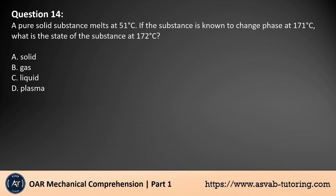Question 14. A pure solid substance melts at 51 degrees Celsius. If the substance is known to change phase at 171 degrees Celsius, what is the state of the substance at 172 degrees Celsius? A. Solid. B. Gas. C. Liquid. D. Plasma. The answer is B.